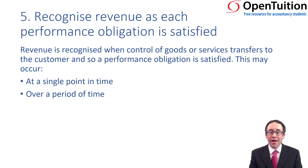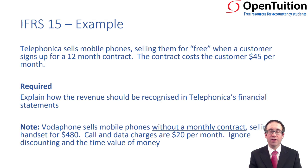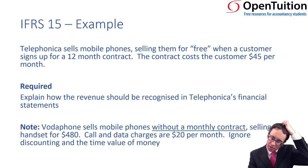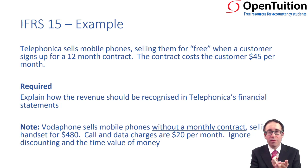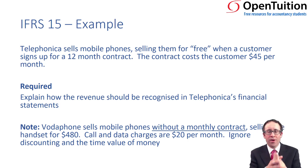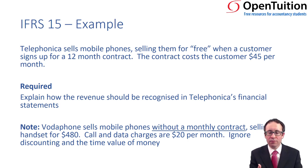So let's have a look at the example. It wants us to explain how the revenue should be recognised in Telefonica's financial statements. The explanation is going to take us through the five separate steps: identifying the contract, looking at the performance obligations, looking at the transaction price, looking at the allocation of the transaction price, and then the recognition. I'm not going to focus on the debits and credits just yet — I just want to focus on recognising the goods at a point in time and the services over a period of time.